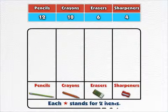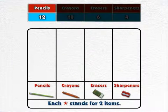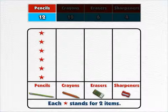Let's use one picture or one star to stand for two items. So, to show twelve pencils on the picture graph, we use one, two, three, four, five, six. Six stars. Because six times two is twelve.